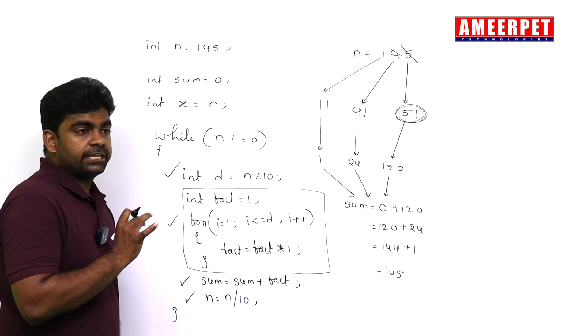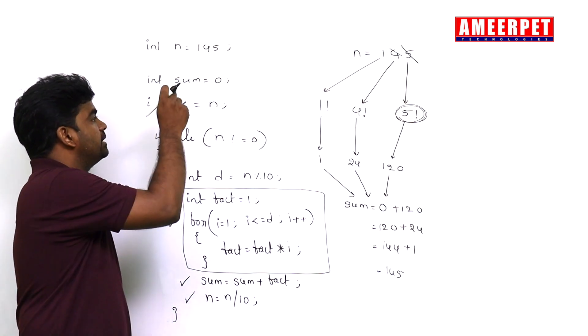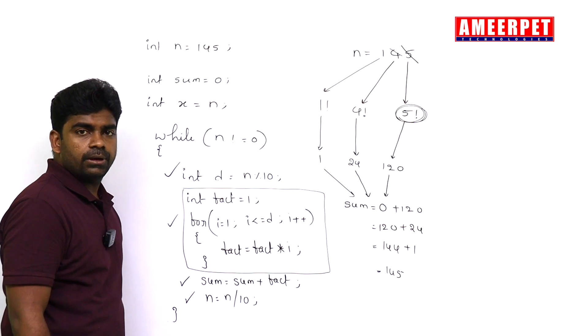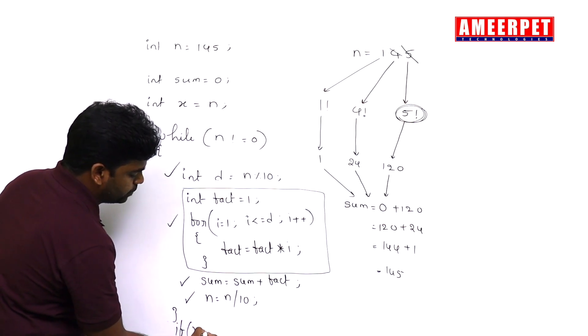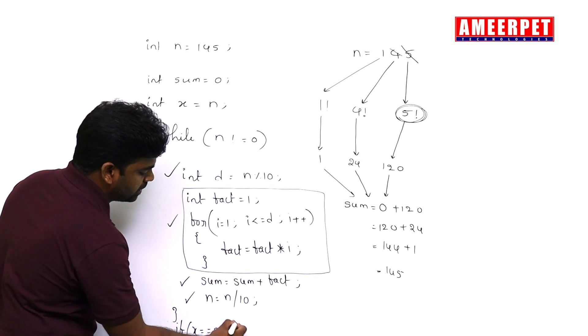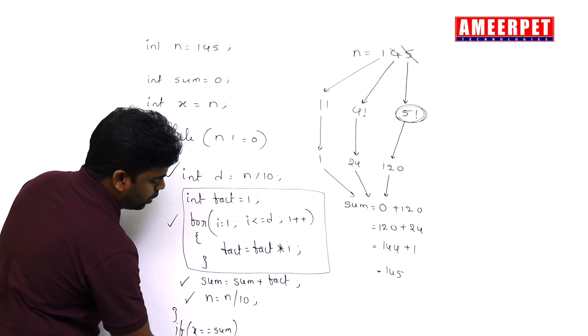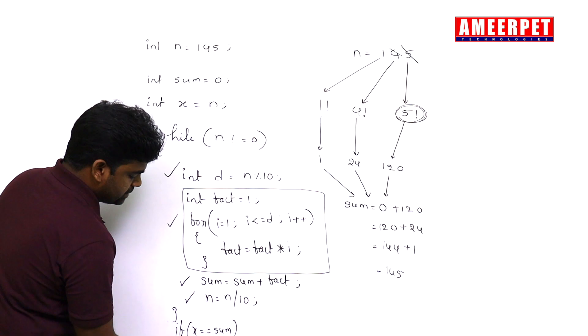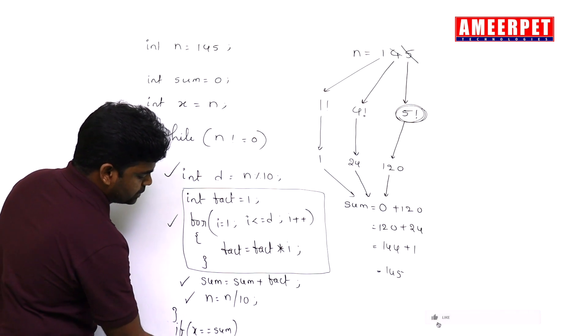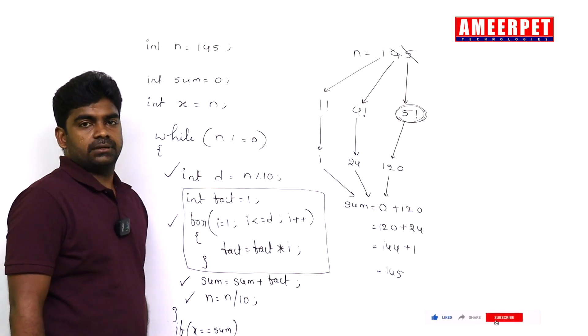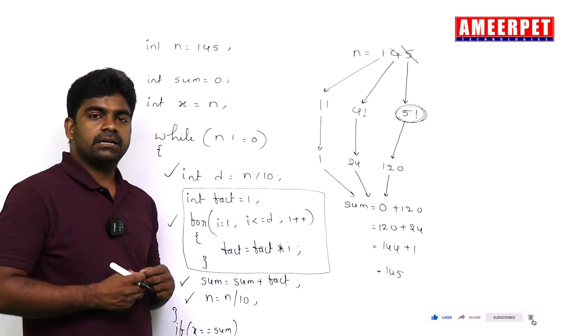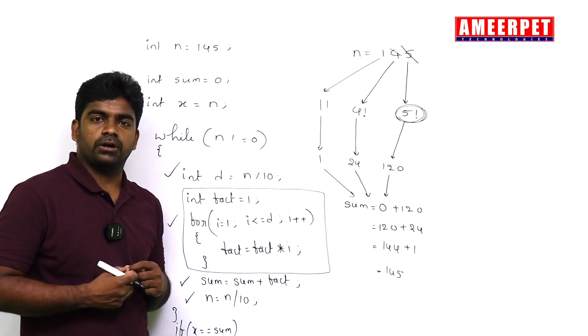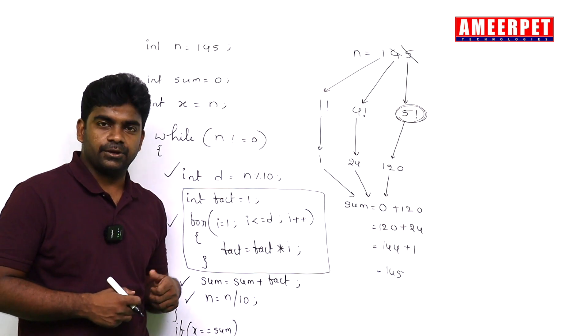Finally, we are checking if the sum value and the given number are both equal or not. So simple: if x value equals to sum, then print it is a strong number, else you are saying that it's not a strong number. This is the simple way of checking if the given number is a strong number or not. Hope you understood guys, thank you.